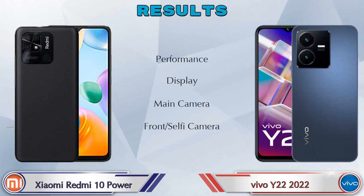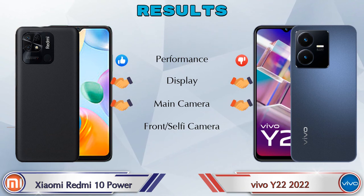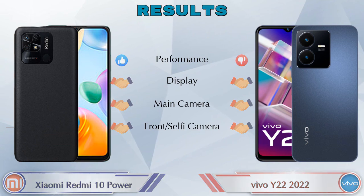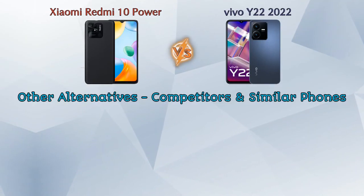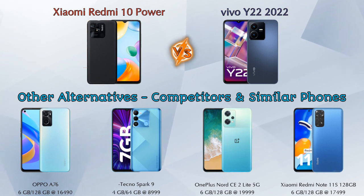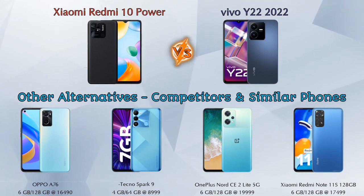Talking about the result: in performance, Redmi 10 Power is ahead. In display, both phones are the same. In main camera, both phones are the same. In front selfie camera, both phones are the same. For other competitors at the same price: first is Oppo A76, second is Tecno Spark 9, third is OnePlus Nord CE2 Lite 5G, and the last one is Xiaomi Redmi Note 11S.